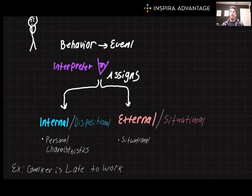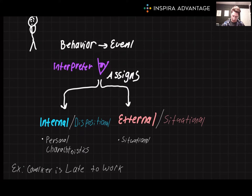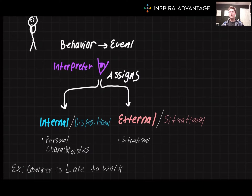Internal attributions, also known as dispositional attributions, attribute behavior to a person's traits or personality. For instance, if someone is late to a meeting, you might think that they are always disorganized. On the other hand, external attributions, also known as situational attributions, attribute behavior to external factors. In the same scenario, you might attribute the lateness to traffic or unforeseen circumstances.